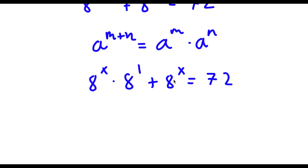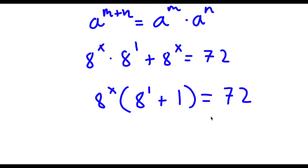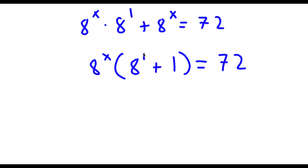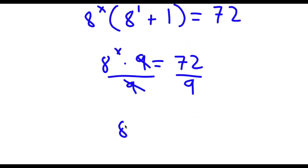Now from here, because both of these terms have 8 to the power of x, I'm going to factor out 8 to the power of x. So now I have 8 to the power of x times 8 to the power of 1 plus 1, which equals 9. So I have 8 to the power of x times 9 is equal to 72. Now I'm going to divide both sides by 9, so these two cancel out. I'm left with 8 to the power of x is equal to 72 divided by 9, which is 8.